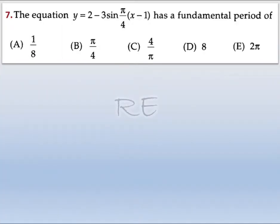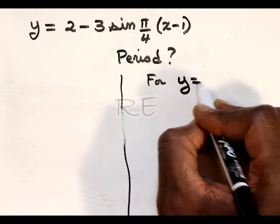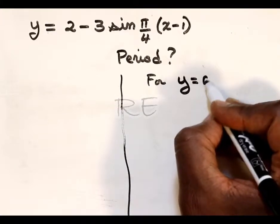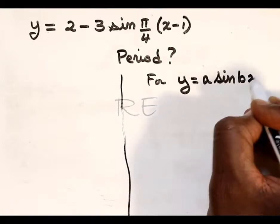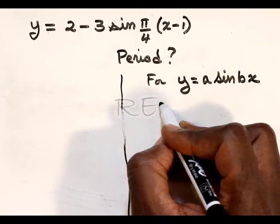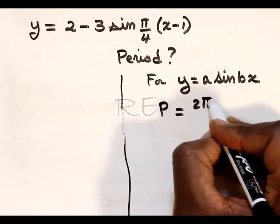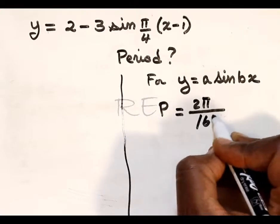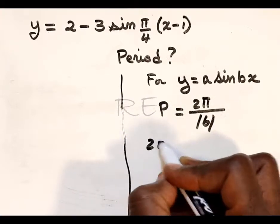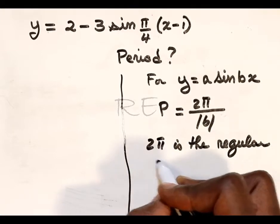For question 7, we have to find the fundamental period of the trig equation. Now for y equals a sine bx, the period is found by dividing 2π, which is the period of sine x, the parent function, divided by the absolute value of b, the coefficient of x.